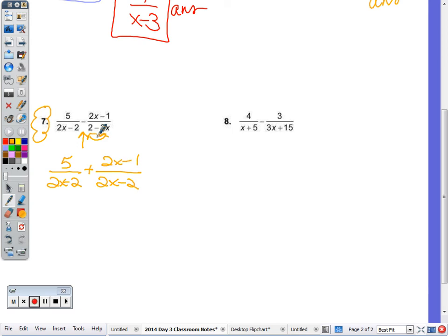Now the denominators are the same. Keep the denominator and add the top. Nothing to combine with the 2x, so this is 2x, and then 5 plus the negative 1 is 4.